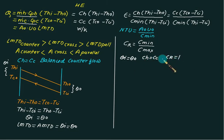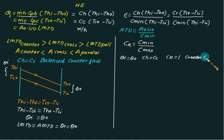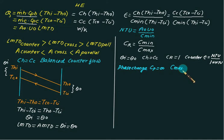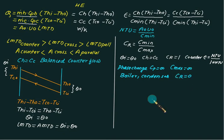Otherwise we have C_R less than 1. Only for the special case do we use this. For the basic counter flow case, effectiveness equals NTU divided by (1 + NTU). If we have a phase change process like a boiler or condenser, C_max goes to infinity, so C_R equals 0.